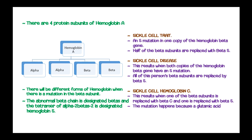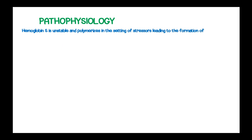The mutation occurs because the glutamic acid residue is replaced by a lysine residue at the sixth position of the beta-globin chain. Hemoglobin S is unstable and polymerizes under conditions of stress, leading to the formation of a sickle-shaped red blood cell.